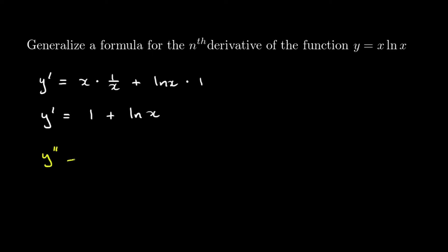Second derivative will be the derivative of that sum. So good news is no more product rule. This is going to be the derivative of 1 which is 0 plus derivative of ln of x which is 1 over x.